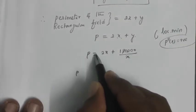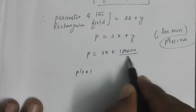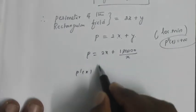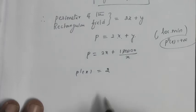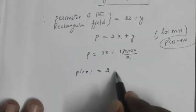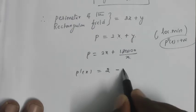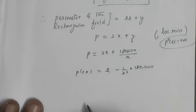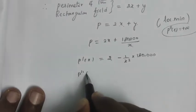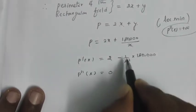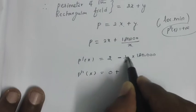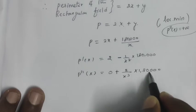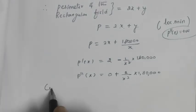Now this is P(x) in terms of x. Now we will do differentiation. P'(x) = 2 - 1/x² × 180,000. P''(x) = 2/x³ × 180,000. The condition is first order derivative test.